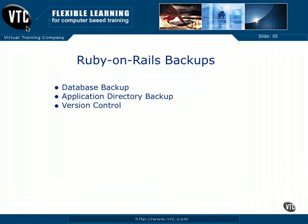In this video, we're going to look at what you need to do to back up your Ruby on Rails applications. There are two main things to look at. One, and the main thing, is that your database needs to be backed up appropriately. The second thing is that the Ruby on Rails application itself should be backed up regularly, just in case something should happen to your server. The third thing we're going to look at is version control. This isn't exactly backup, but if you have your Ruby on Rails application under version control, you've essentially created a very sophisticated type of backup.